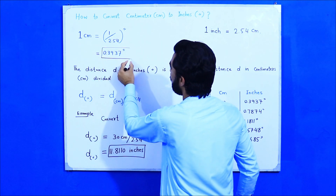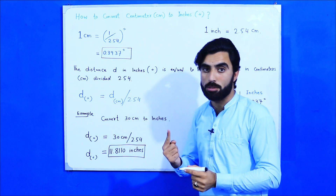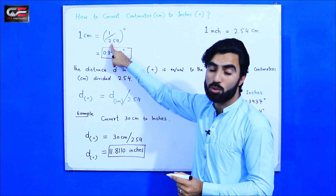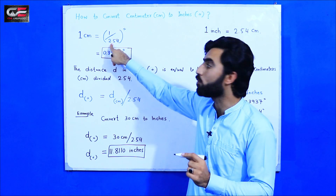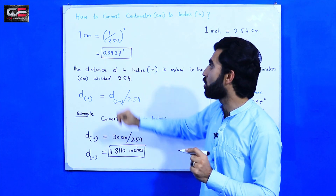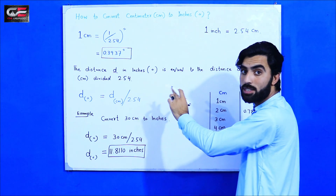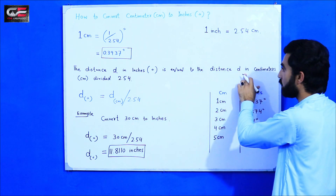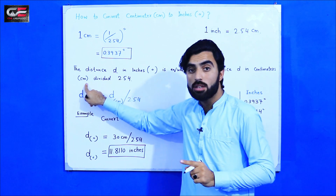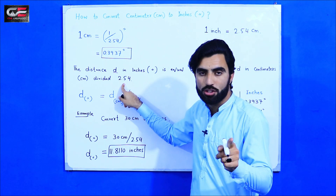When you calculate 1 divided by 2.54, it gives us 0.3937 inches. So one centimeter equals 0.3937 inches. The general formula is: distance d in inches equals distance d in centimeters divided by 2.54.